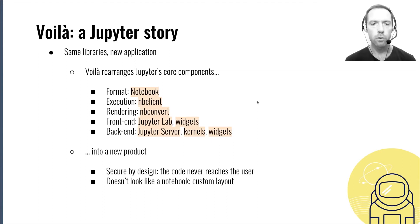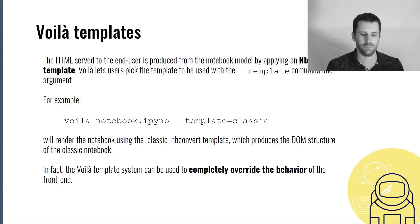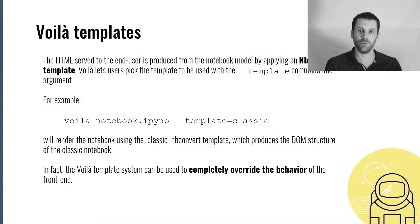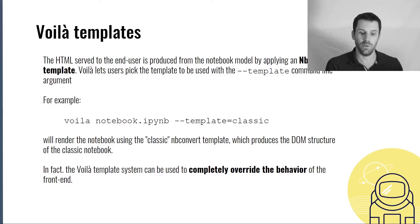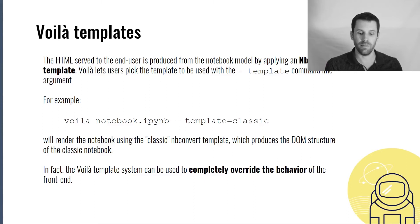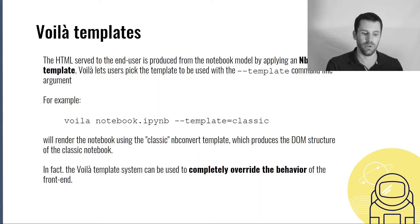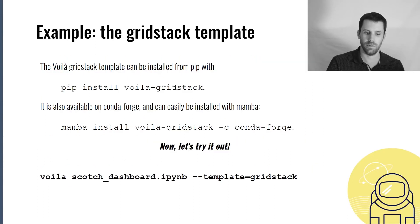It also doesn't have to look like a notebook. Thanks to templates, you can create completely custom layouts. When showing a Voila dashboard, the HTML served to the end user is produced from a notebook model applying an nbconvert template. Voila lets users pick the template with the '--template' command-line argument. For example, 'voila notebook.ipynb --template=classic' will render the notebook using the classic nbconvert template, which produces the same DOM structure as the classic notebook. In fact, the template system can be used to completely override the behavior of the front-end.